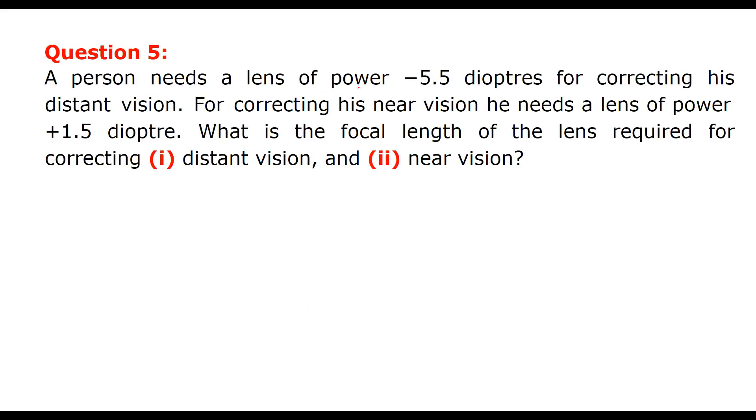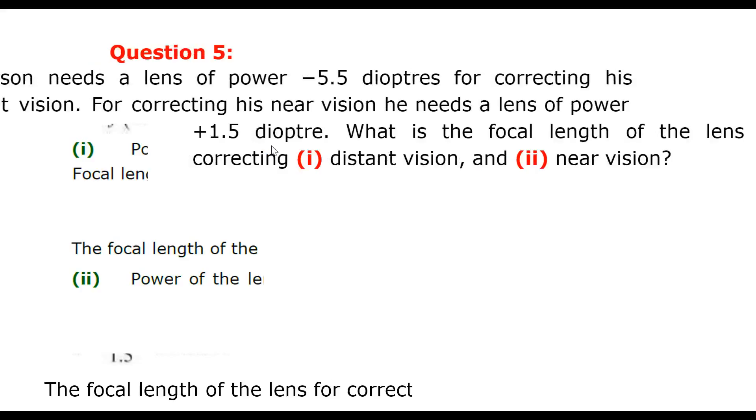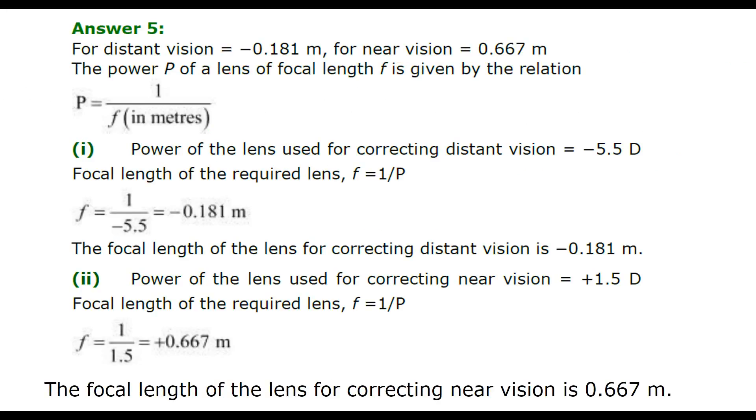A person needs a lens of power minus 5.5 diopters for correcting his distance vision. For correcting his near vision, he needs a lens of power plus 1.5 diopters. So what is the focal length of the lens required for correcting distance vision and near vision? We have a simple relation for that. The power is related inversely to the focal length, to be very precise P is equal to 1 by f, and this has to be in meters.